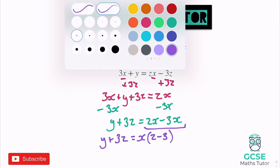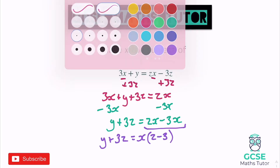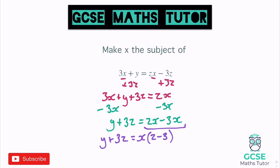Now I've just got one x in my formula. The final step to finish this off is to divide both sides by this bracket. Once I divide both sides by that bracket, x will be isolated on its own, and all we've got to do is stick that underneath what's on the left. So we have y plus 3z on the top, divided by that bracket z minus 3, and that all equals x.